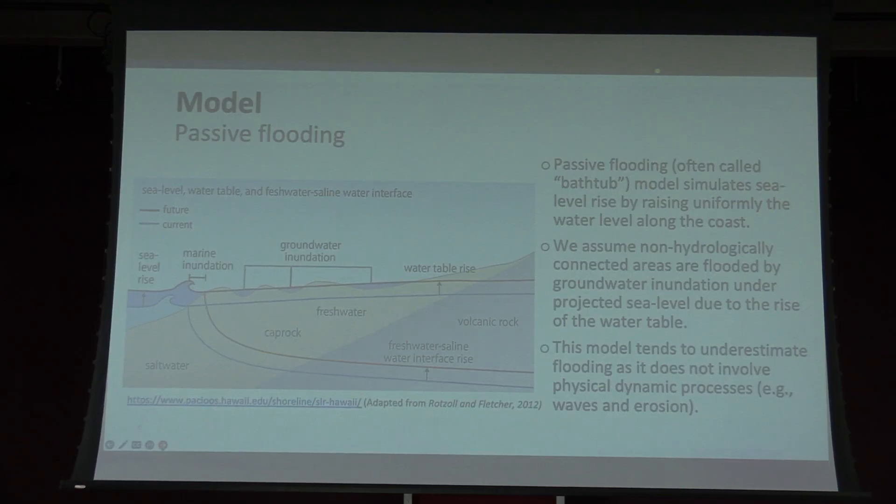The important point about those projections is that we added land subsidence specific to American Samoa, based on a study in 2019 by Hahn and colleagues, who have very specific land subsidence projections for here. Combining those two datasets, we made a passive flooding model — often called a bathtub model — which simulates sea level rise by raising the water level uniformly. We don't really take into account any dynamics of the ocean, so waves are not taken into account. Usually it underestimates the amount of sea level flooding we see on those maps.